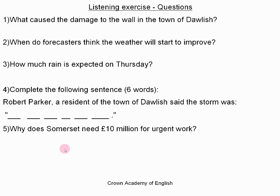In the towns of Fordgate and Northmore, police used a helicopter to advise people in more than 150 houses to leave their homes. Weather forecasters say the weather will start improving on Wednesday evening but there will be more rain on Thursday. Between 20 and 30 mm of rain is expected during the day on Thursday. Robert Parker, a resident of the town of Dawlish, said the storm was like the end of the world.